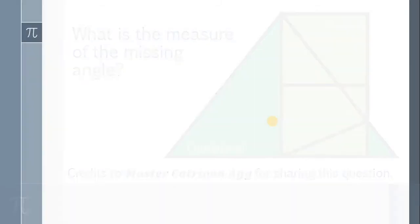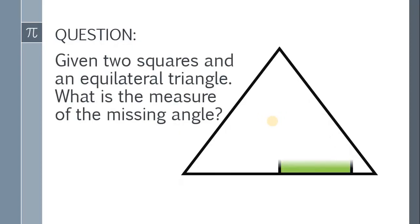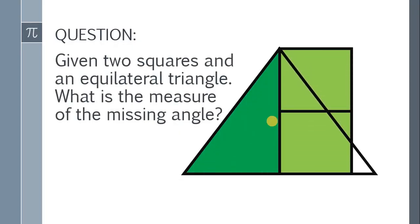So let's start. Here's the question. Given two squares and an equilateral triangle, what is the measure of the missing angle?